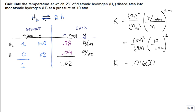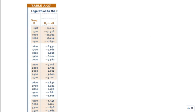Now that we know K, and K is a function of temperature, we go to the table. In the table they list log base 10 of K. So calculate log₁₀(0.016), which gives negative 1.796. Now go to the table and look for the temperature corresponding to log₁₀(K) = −1.796 for this dissociation reaction.